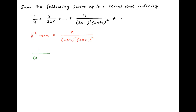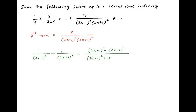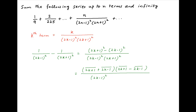Note that the expression 1 upon (2k minus 1) whole square minus 1 upon (2k plus 1) whole square is equal to (2k plus 1) whole square minus (2k minus 1) whole square, divided by (2k minus 1) whole square times (2k plus 1) whole square, which equals (2k plus 1 plus 2k minus 1) multiplied by (2k plus 1 minus 2k plus 1), divided by (2k minus 1) whole square times (2k plus 1) whole square.